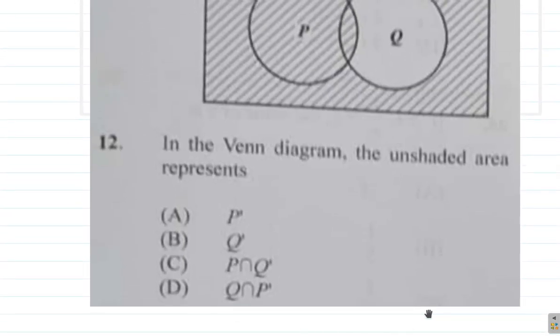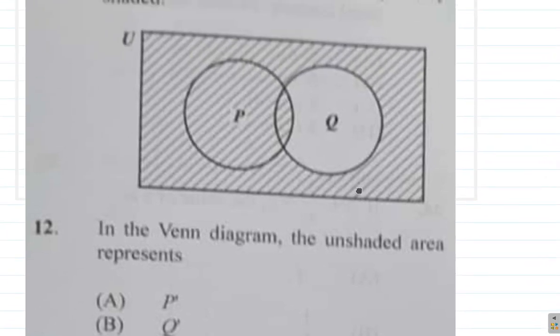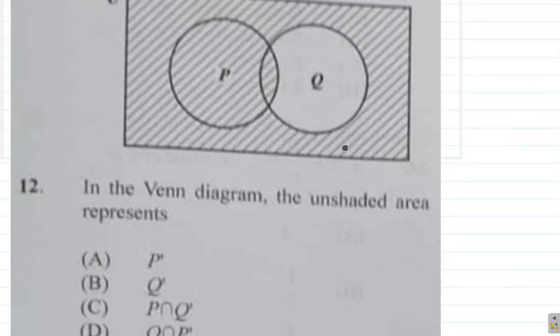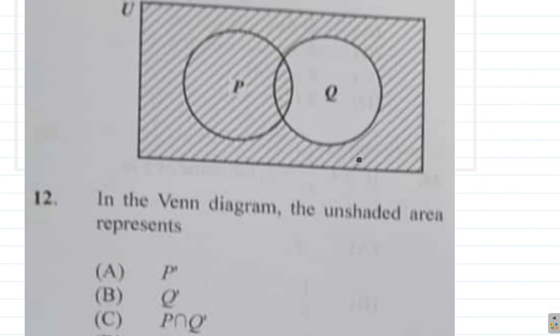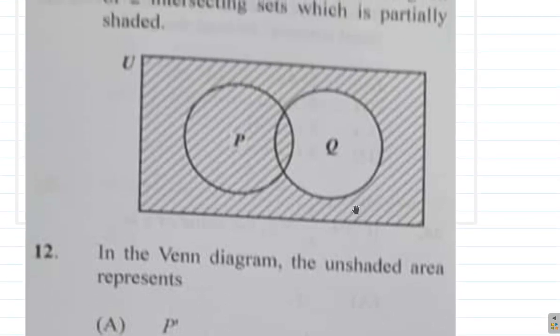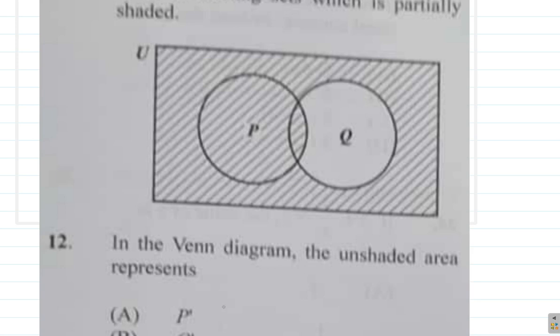All right, see what happened here. Is it P complement? If you shade P complement, you shade outside of P. So that is not what it represents because this here would be shaded too.